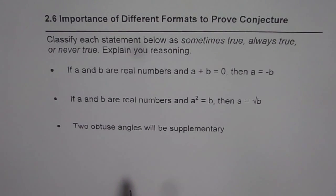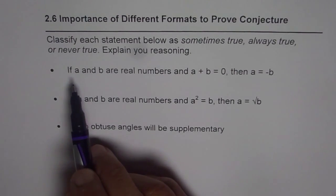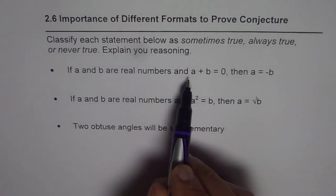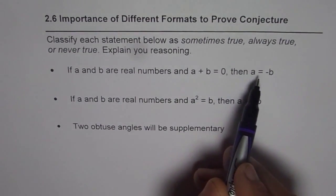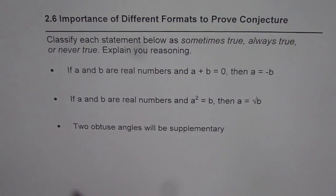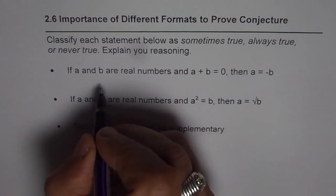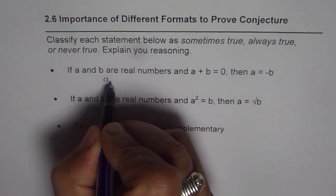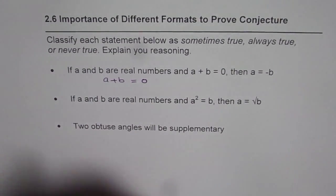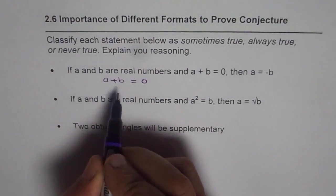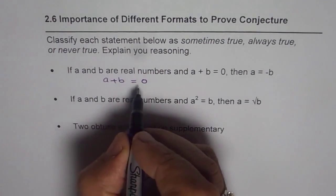Let's begin with the very first one: if A and B are real numbers and A plus B equals zero, then A equals minus B. How can we prove it? We can adopt an algebraic proof for this. Since A plus B equals zero, what we can do is subtract B from both sides.